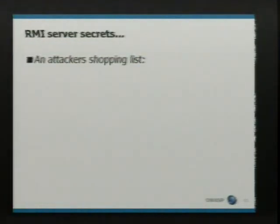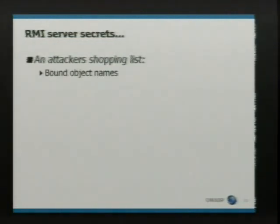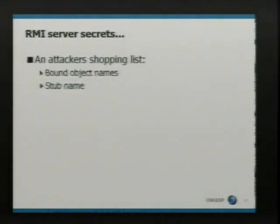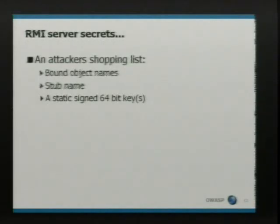So if you're going to attack an RMI service, what do we need? We need to be able to communicate with the registry, so we need to know what the bound object names are. We need to know what the stub name is. As we've seen, you need a stub and a corresponding skeleton, and these names must match up — otherwise the stub and skeleton won't communicate. And as I mentioned with the 64-bit key, this is going to give you access to the service, so we need to retrieve that detail as well.